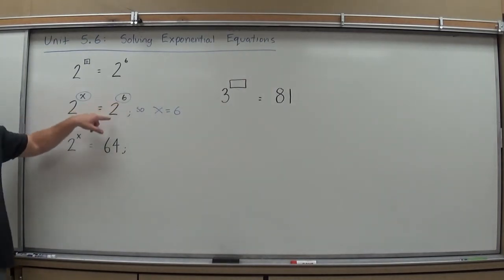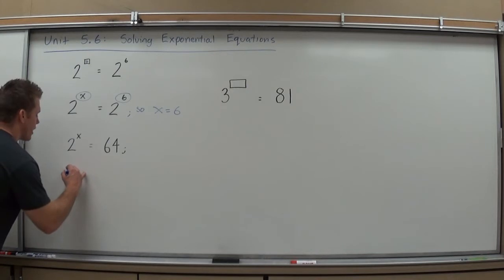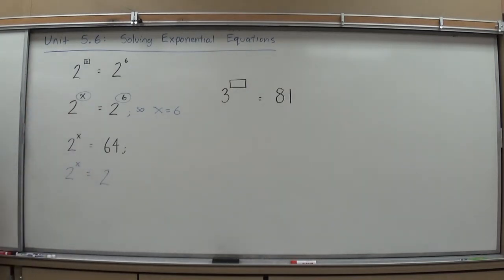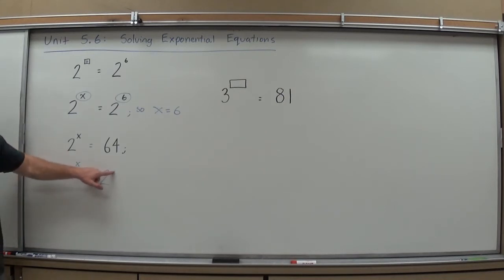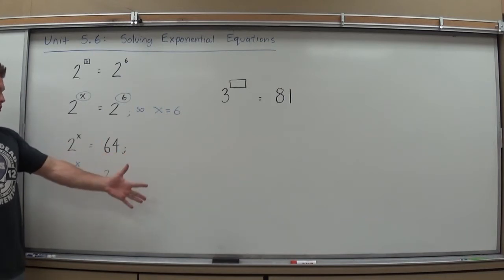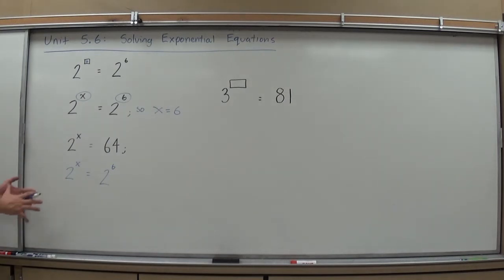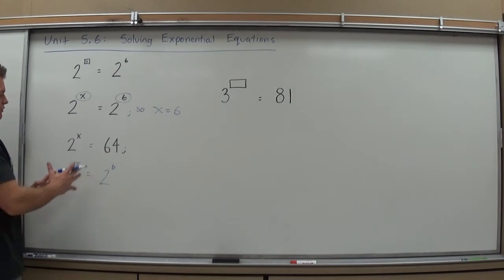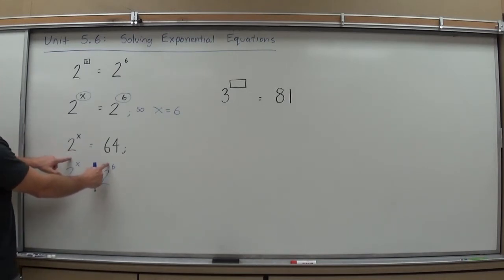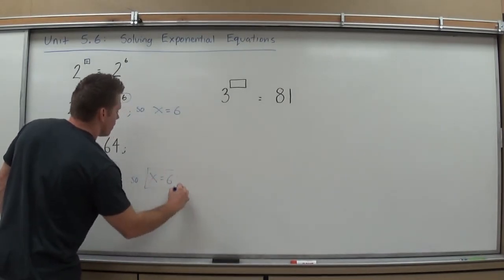You're probably not going to be lucky enough to get them already written as a power. So when you get these, you need to look at the base you have that contains the variable, and make the other side have the same base. I need to find what power of 2 equals 64: 2×2=4, ×2=8, ×2=16, ×2=32, ×2=64. So 2 to the 6th is equivalent to 64. The left side is still 2 to the x, and since 2 to the 6 is 64 they're still equal. Now that the bases are the same, x must equal 6.